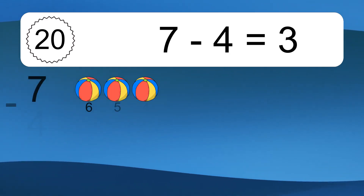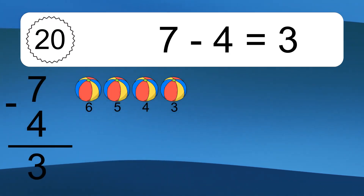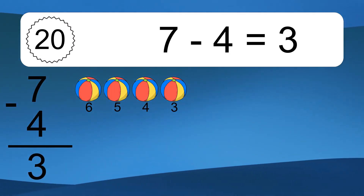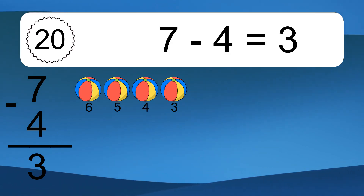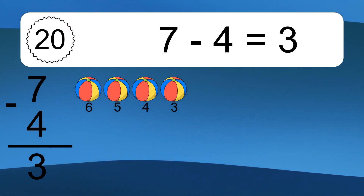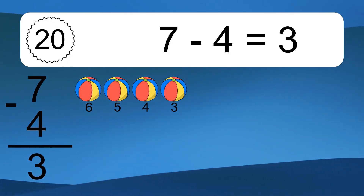7 minus 4 equals what? 7 minus 4 equals 3. Let's count it. 6, 5, 4, 3.